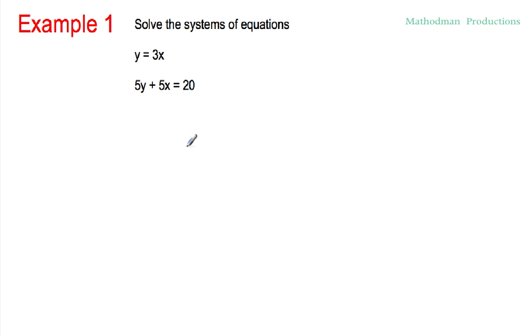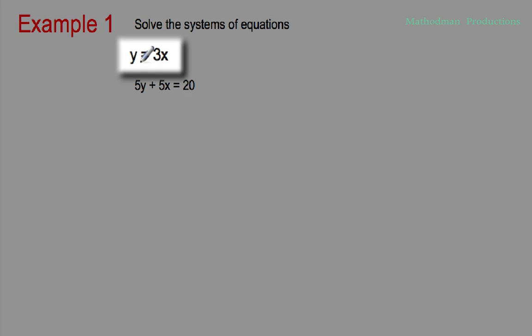So start off by choosing the simpler equation. How can you tell? Well, one, usually it's shorter. And two, sometimes you get lucky and the variable's already isolated. So this one is already solved for y. I'm gonna start with this and I'm gonna substitute it into the second equation.